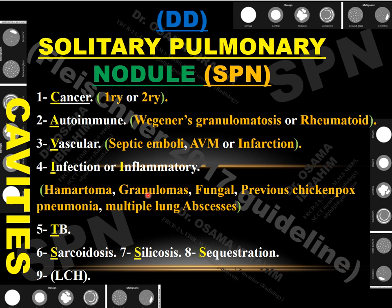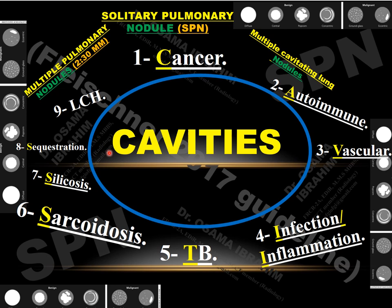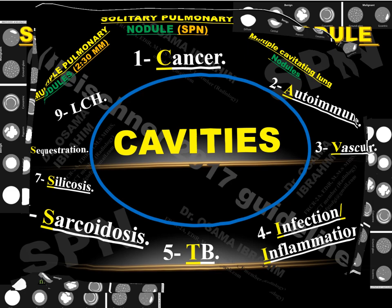When presented with a solitary pulmonary nodule, the main role of the radiologist is to discriminate benign from malignant. The CAVITIES mnemonic can be applied to the differential diagnosis of multiple pulmonary nodules from 2 mm to 30 mm and multiple cavitating lung lesions. A separate presentation on cavities is linked in the description.